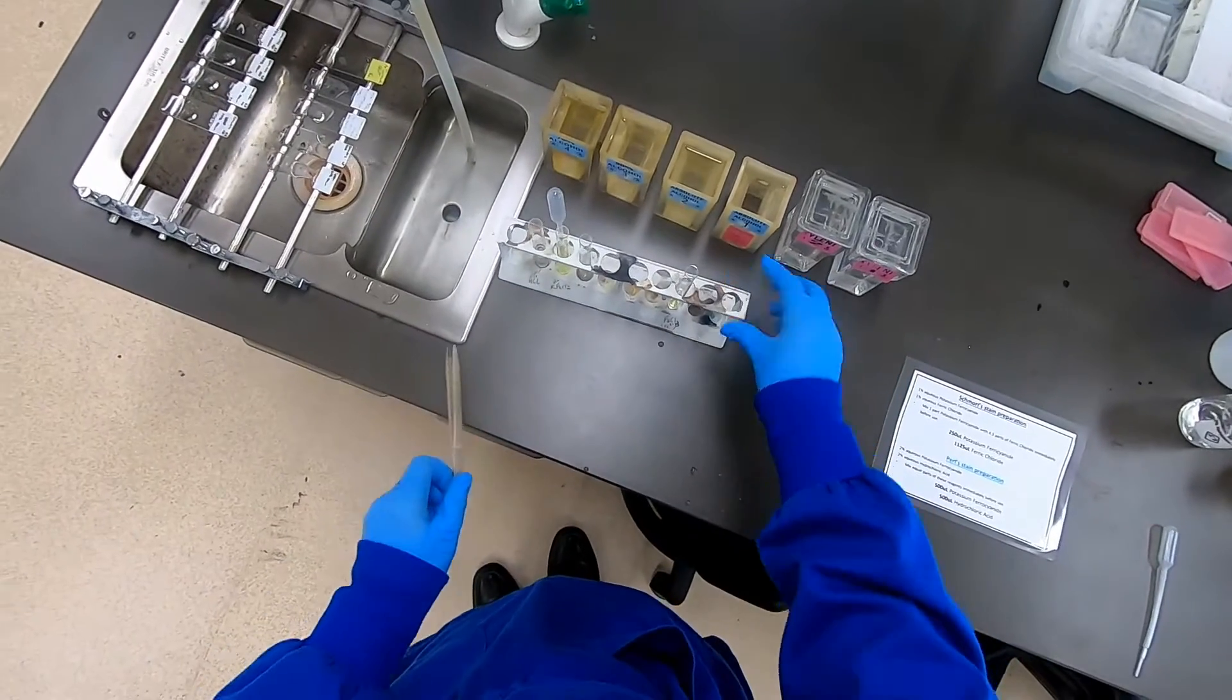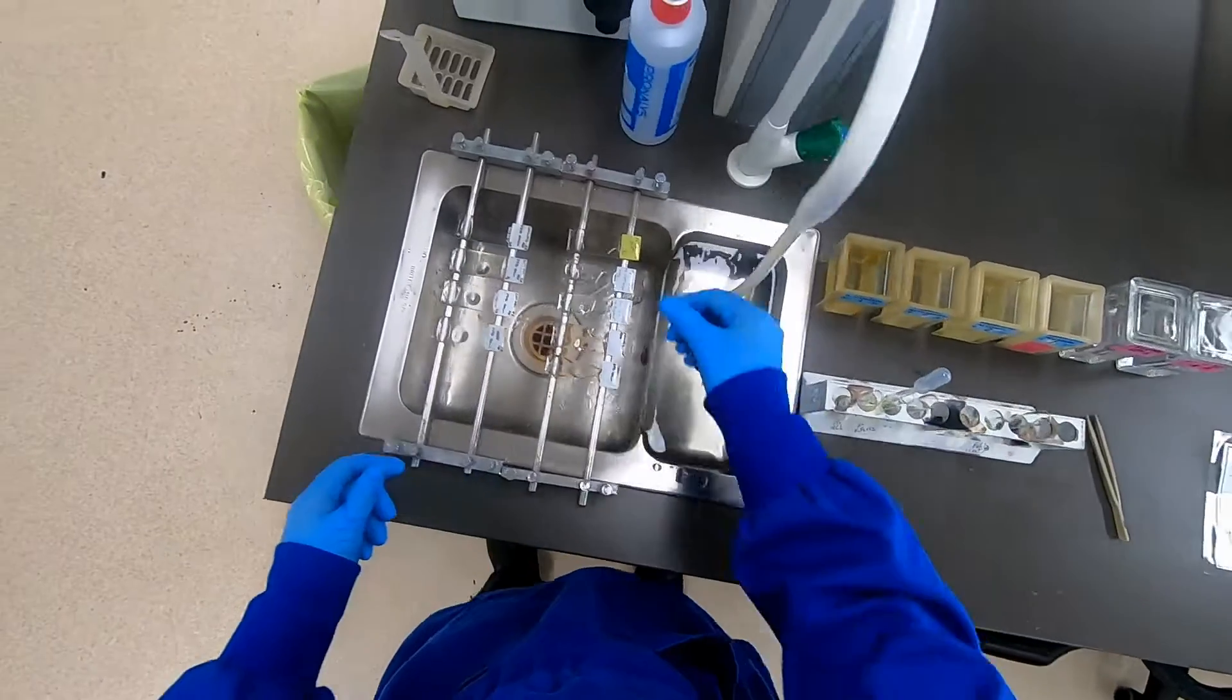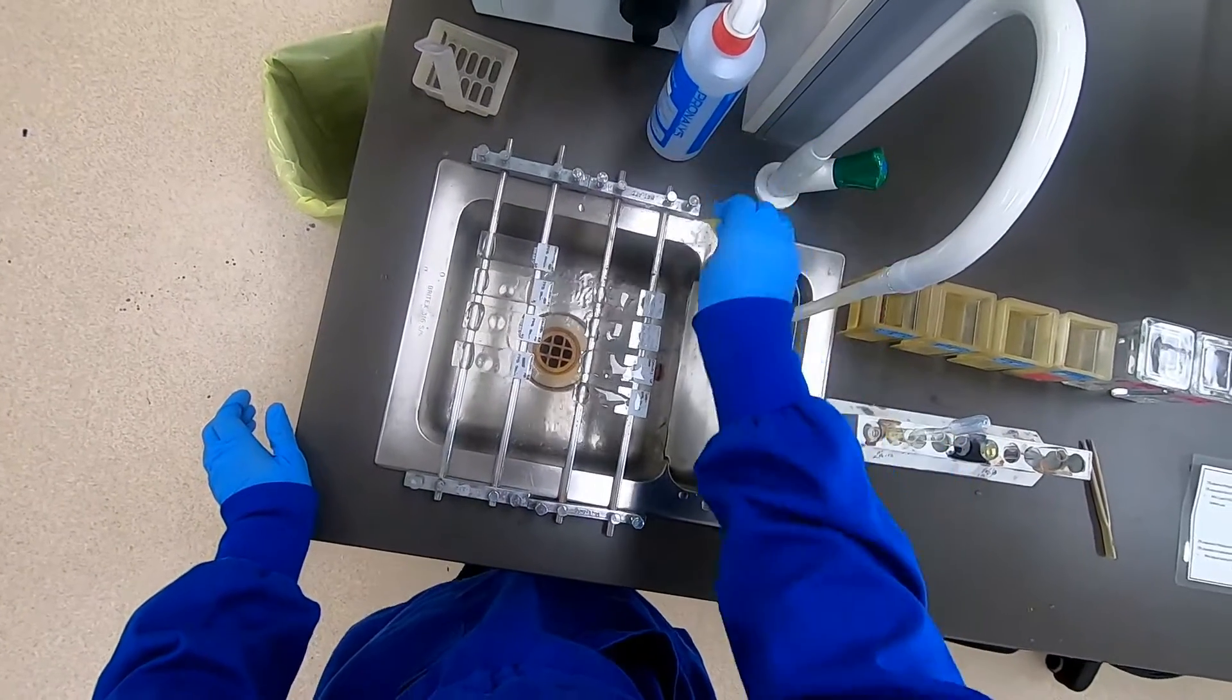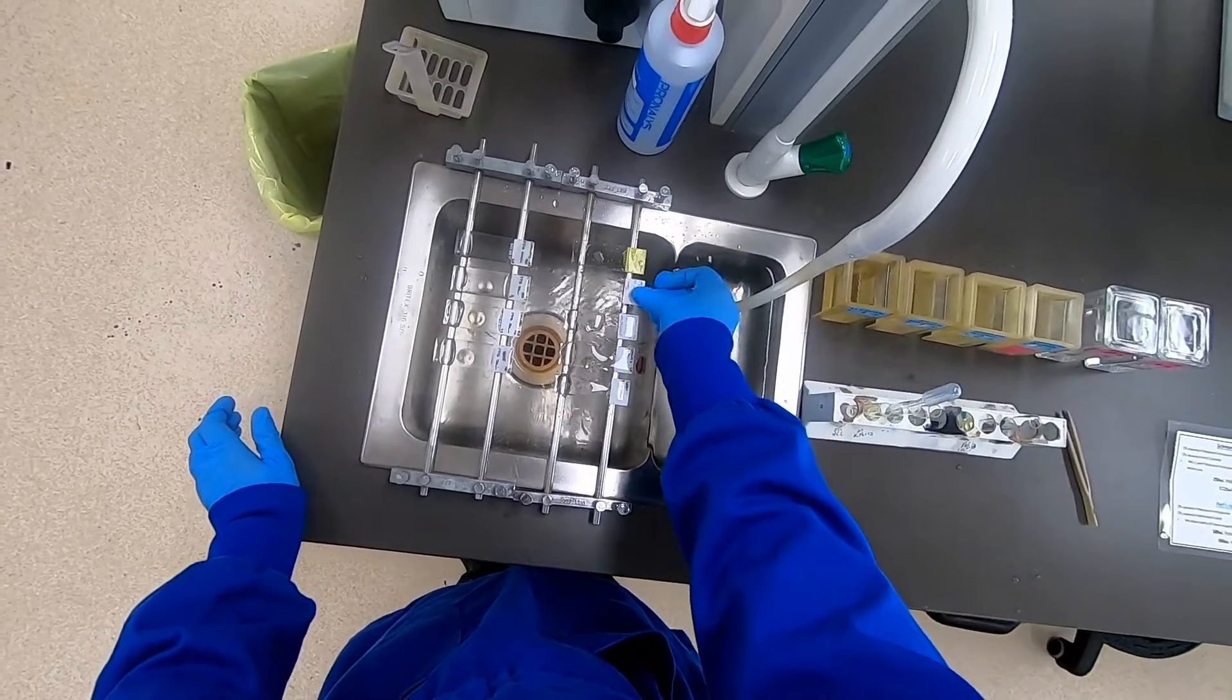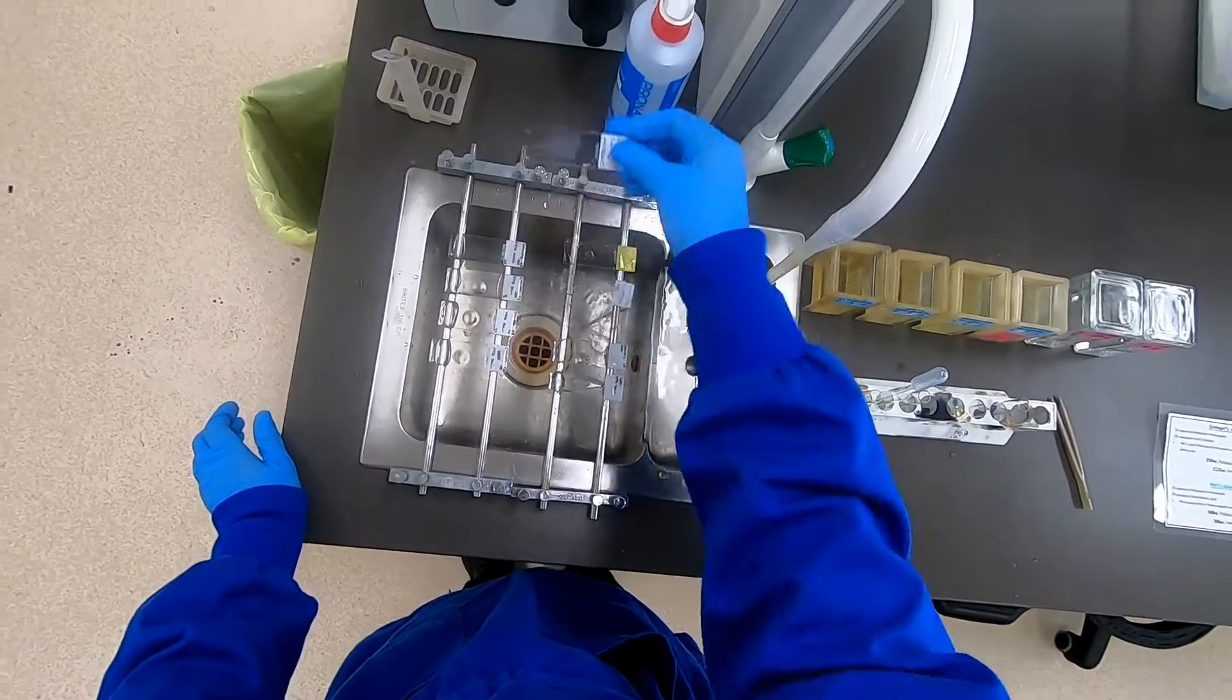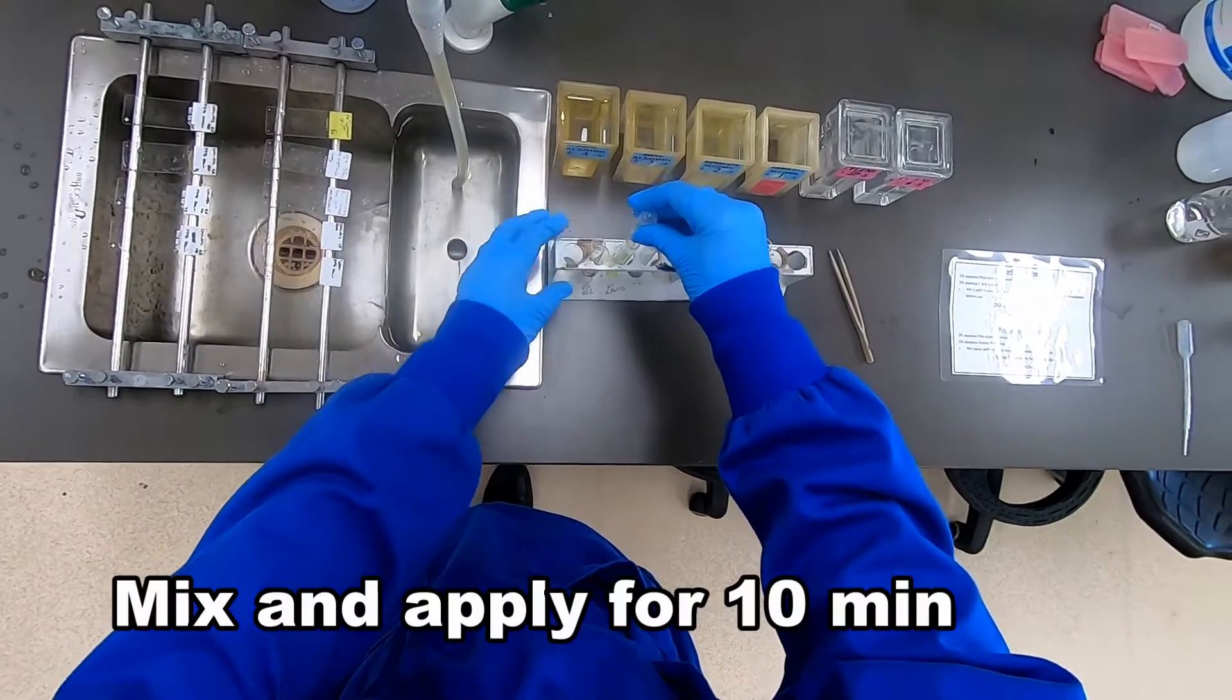It's best to prepare this fresh just before use. We'll simply now flick off the deionized water, and it is important to try and get most of that off so we don't dilute our stain too much.